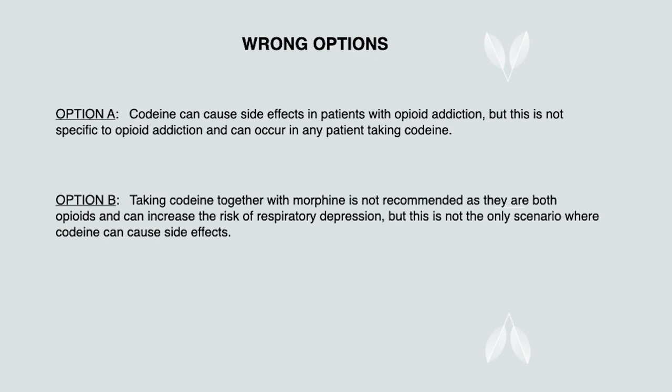In option B, taking codeine together with morphine is not recommended as they are both opioids and can increase the risk of respiratory depression, but this is not the only scenario where codeine can cause side effects.